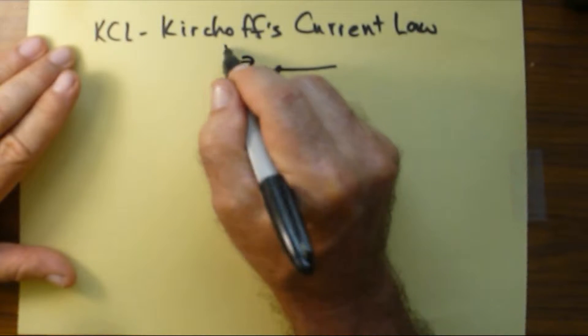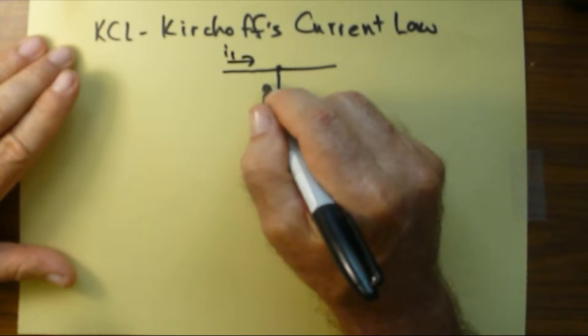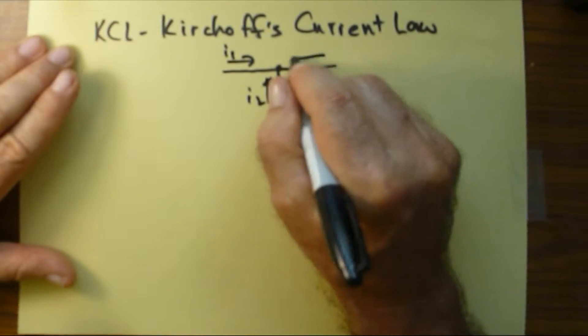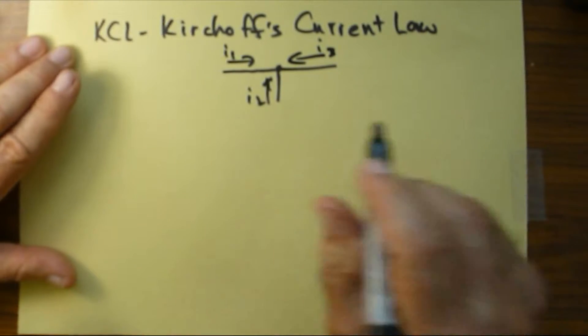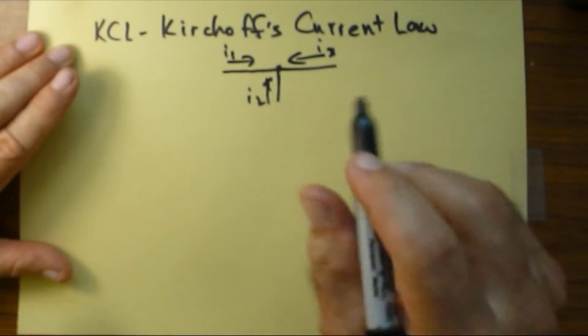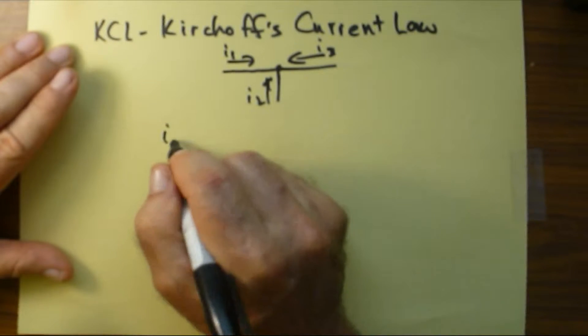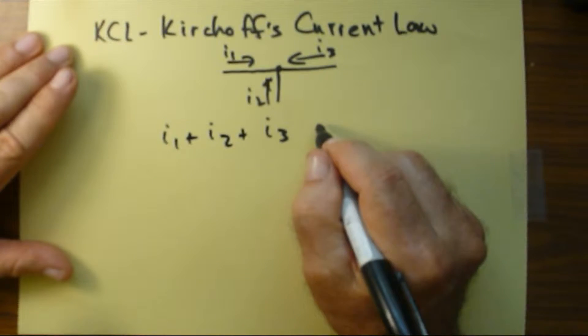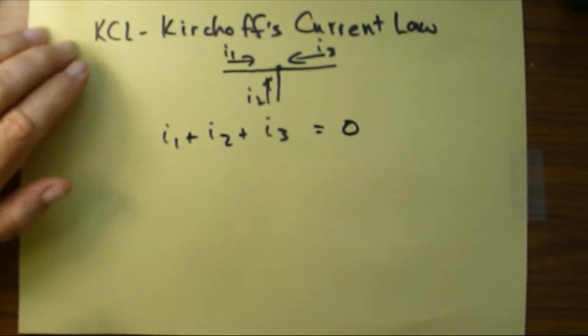But if I have currents I1, and then I2, and then I3 all going into this node, these all have to add up to zero. So what it says is that I1 plus I2 plus I3 equals zero.